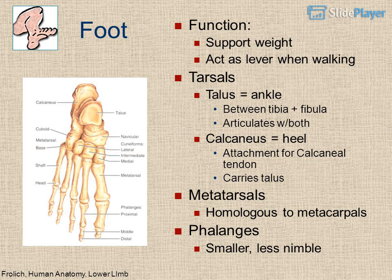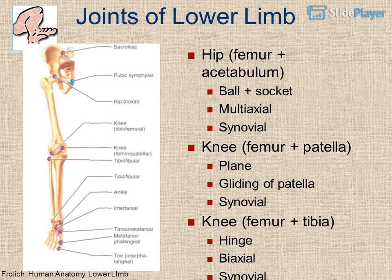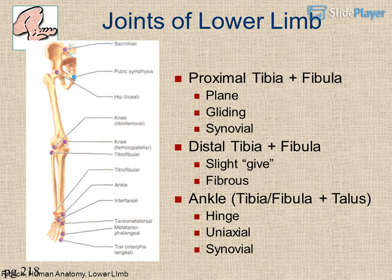Joints of the lower limb: the hip is femur plus acetabulum — a ball and socket, multiaxial synovial joint. The knee has three articulations: femur plus patella (plane gliding), and femur plus tibia (hinge, biaxial). Proximal and distal tibia plus fibula are plane gliding synovial joints. The distal tibiofibular joint has slight give and is fibrous. The ankle — tibia/fibula plus talus — is a hinge, uniaxial joint.